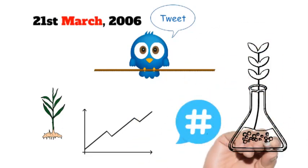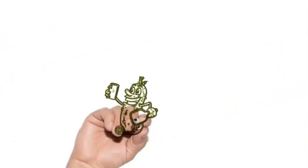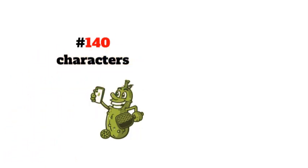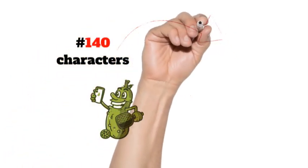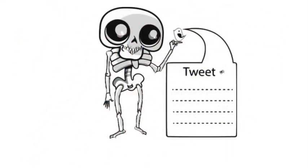In the early days, Twitter was a humble, experimental platform. Its creators envisioned it as a way for individuals to share their status updates and thoughts in 140 characters or less. This character limit, which later expanded to 280, forced users to be concise and creative in their expressions.